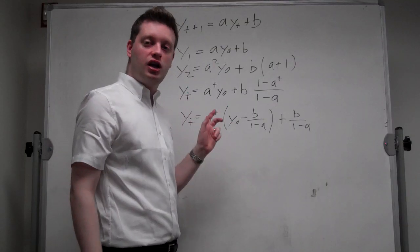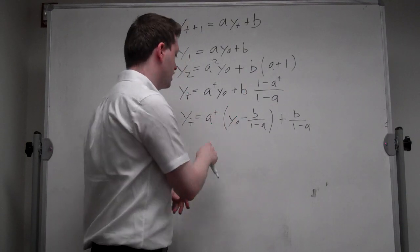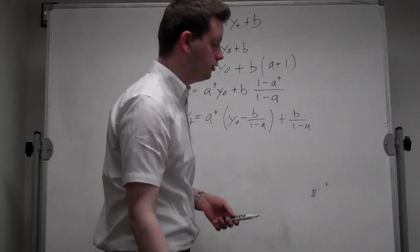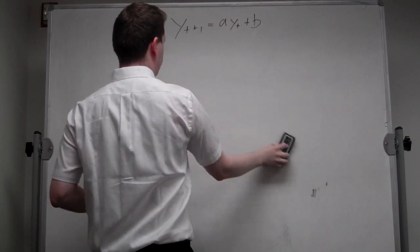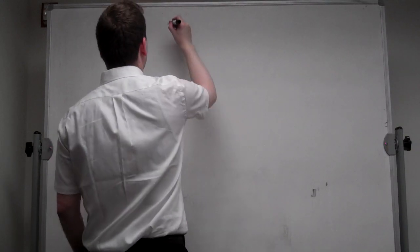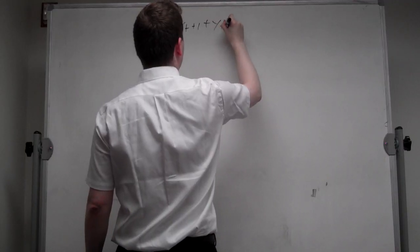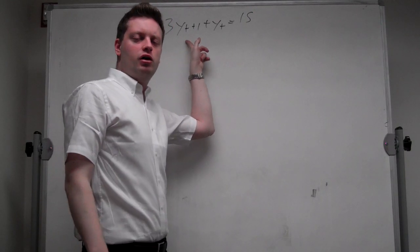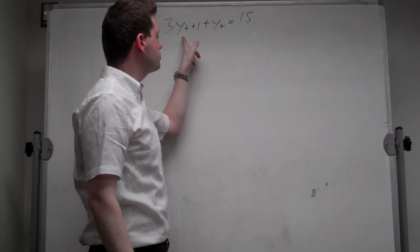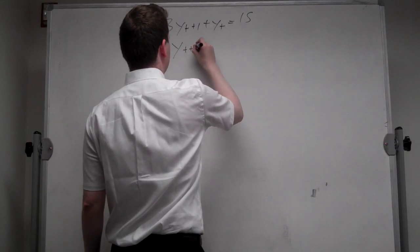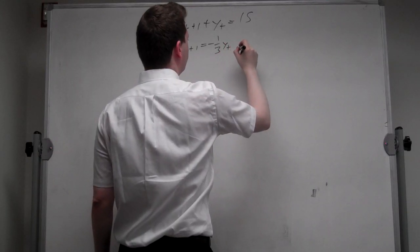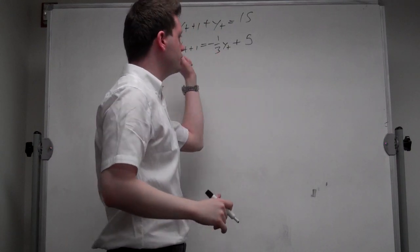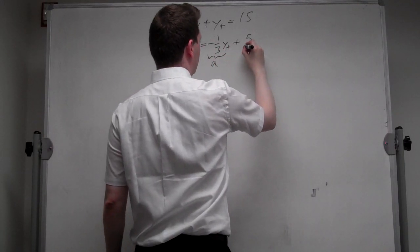And if a is larger than 1 in absolute terms, this thing will blow up to infinity, because a to the t will go to infinity. Now that we have this general formula, let's apply it to a very simple example. Let's say the case where 3·yt+1 plus yt equals 15. You will notice that something is multiplied by yt+1, so we need to first bring it into the appropriate form. The appropriate form is yt+1 equals minus 1 over 3 times yt plus 5 — that's 15 divided by 3. So now we have this equation where we know that a equals minus 1/3 and b equals 5.